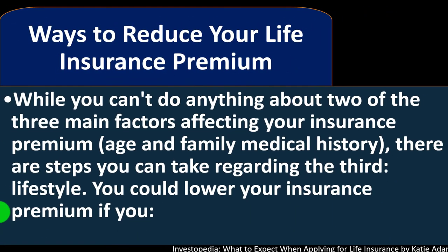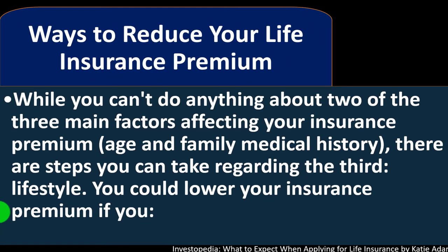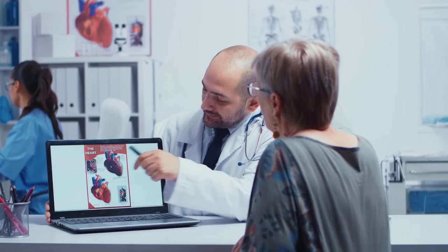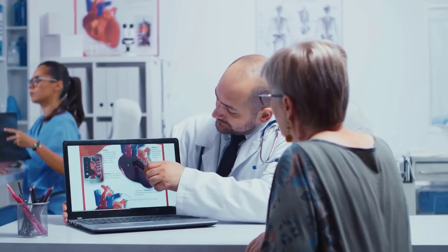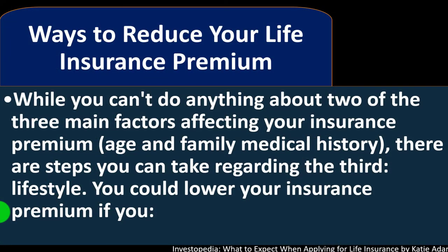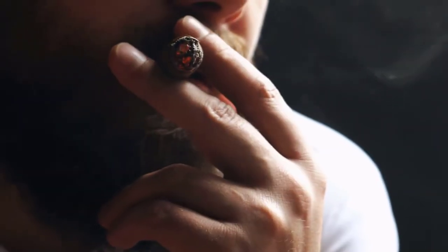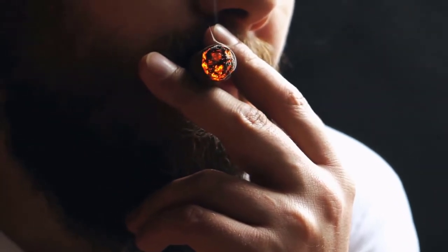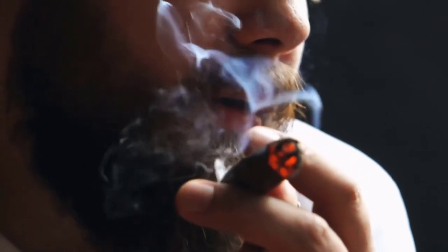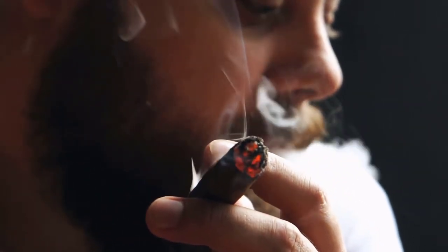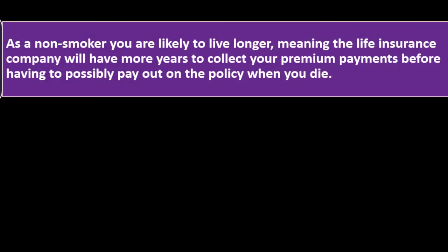Ways to reduce your life insurance premium: while you can't do anything about two of the three main factors affecting your premium — age and family medical history — there are steps you can take regarding the third: lifestyle choices. You could lower your insurance premium if you quit smoking. As a non-smoker, you're likely to live longer, meaning the insurance company will have more years to collect your premium payments before potentially paying out on the policy.